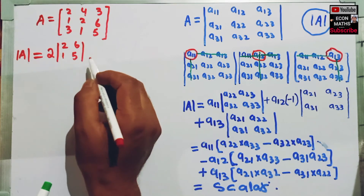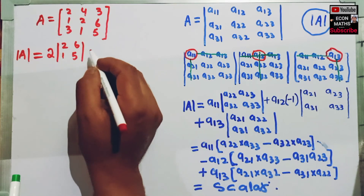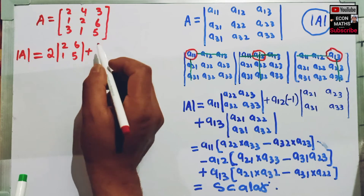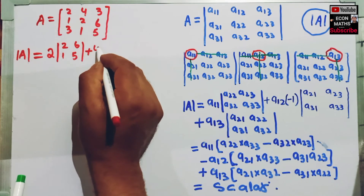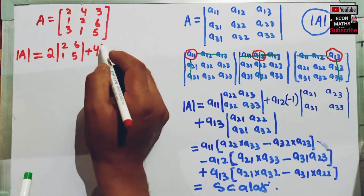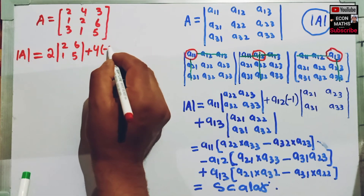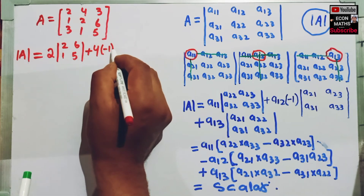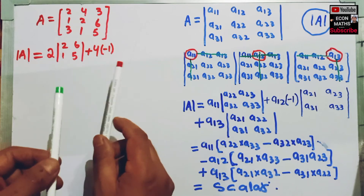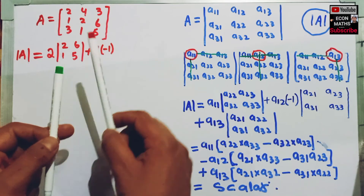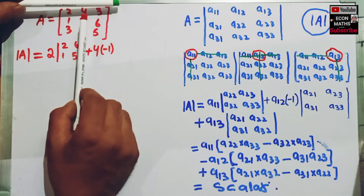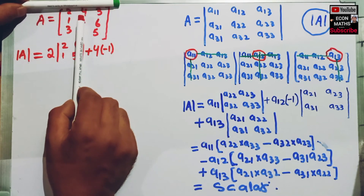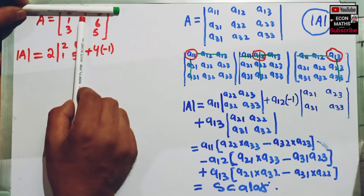This was the first step. For the second step, we take the second element, that is 4, and we multiply it first by minus 1, then mentally delete the row and the column in which it appears — that is these two.